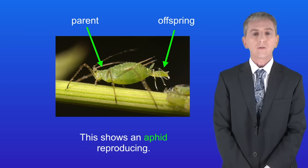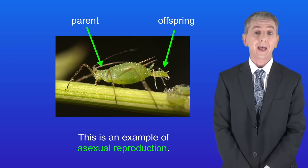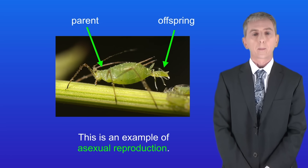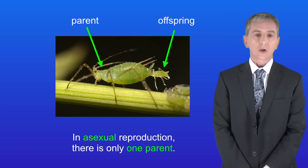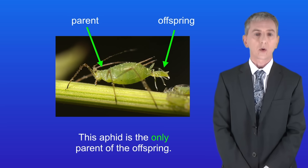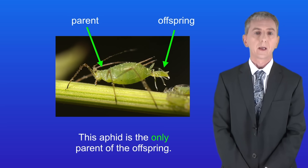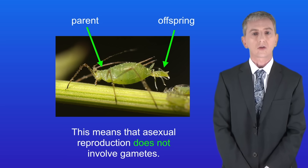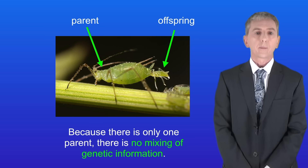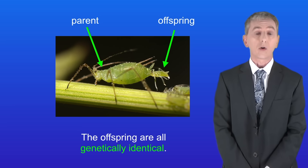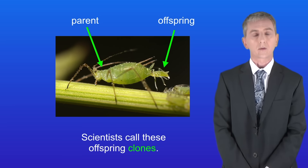Here I'm showing you an aphid reproducing, and this is an example of asexual reproduction. In asexual reproduction there's only one parent, so this aphid is the only parent of the offspring. This means asexual reproduction does not involve gametes. Because there's only one parent there is no mixing of genetic information, and the offspring are all genetically identical. Scientists call these offspring clones.